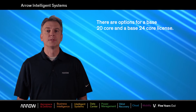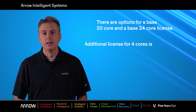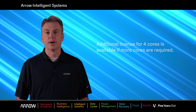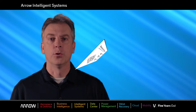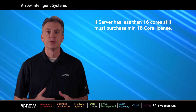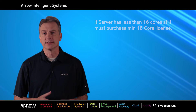There are also part number options for a base 20 core and a base 24 core license. If additional cores are needed, you can use the 4 core incremental add-on part number. Core licensing works by requiring all physical cores of a server be licensed. Each processor must be licensed to cover a minimum of 8 cores, and each system must be licensed by a minimum of 16 cores. If the physical server has less than 16 cores, you're still required to license the system with a minimum base 16 core license.